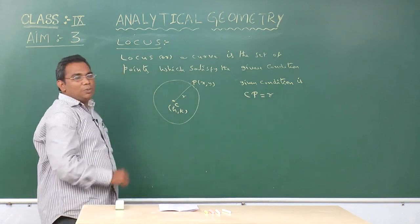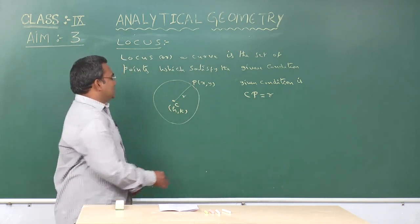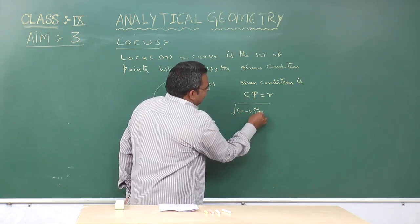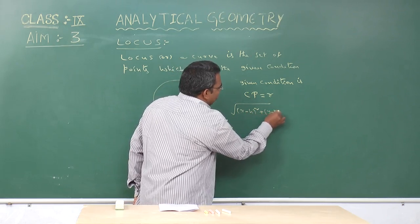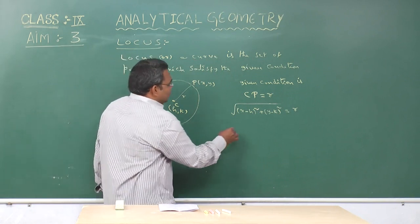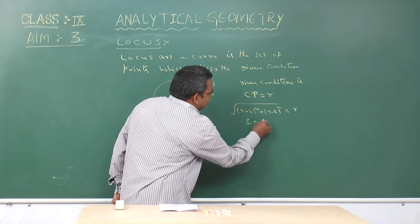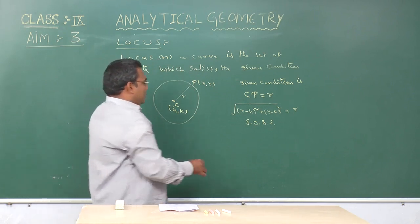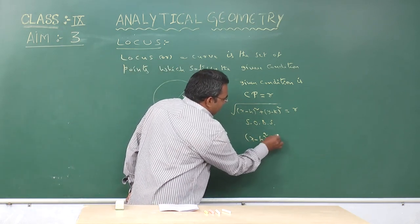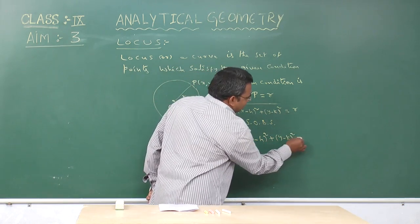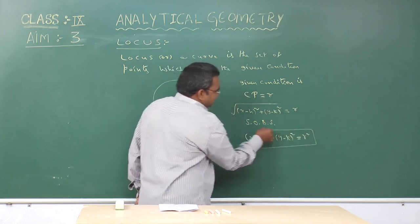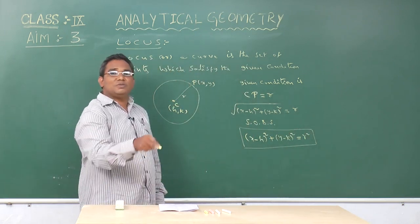By the distance formula, CP equals the square root of (X minus H) whole square plus (Y minus K) whole square, which equals r. By squaring on both sides, we obtain: (X minus H) whole square plus (Y minus K) whole square equals r square. This is the equation of the circle.